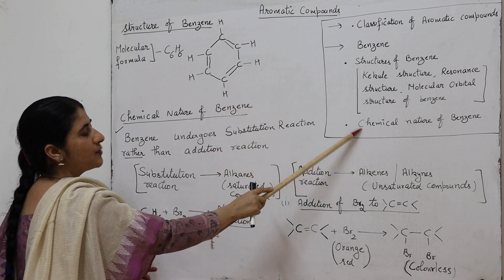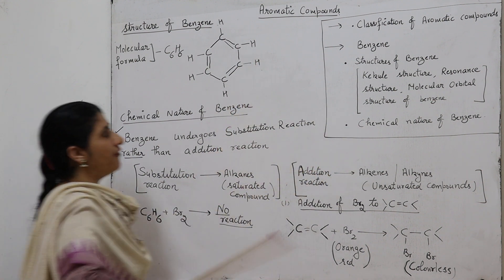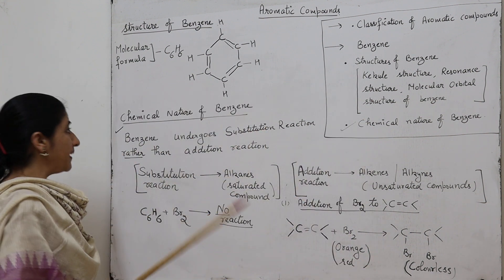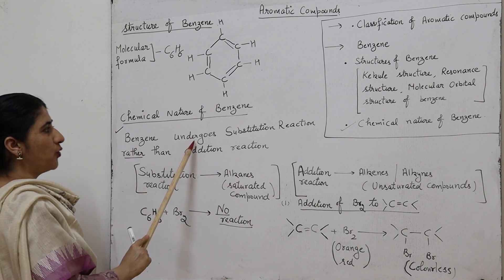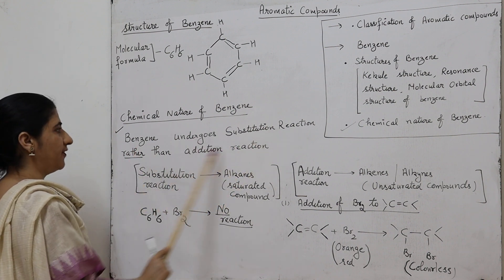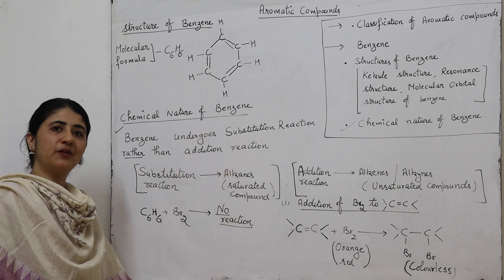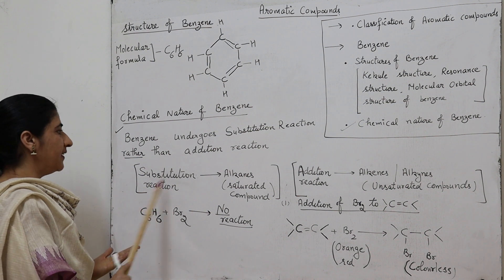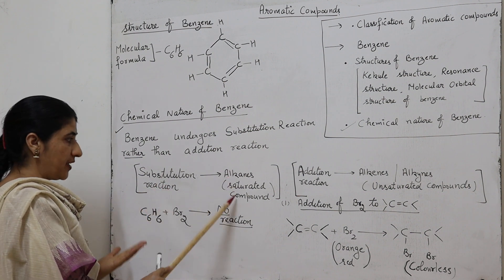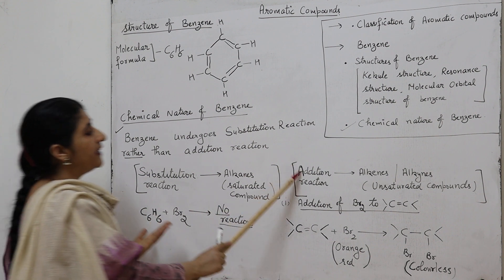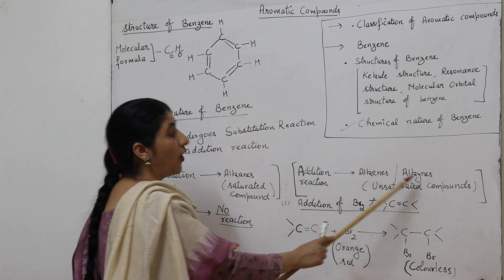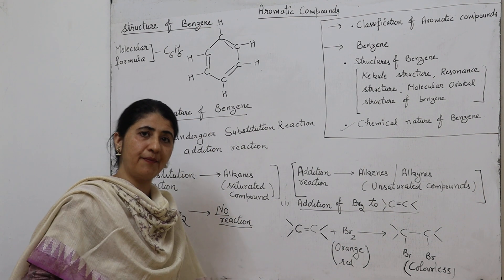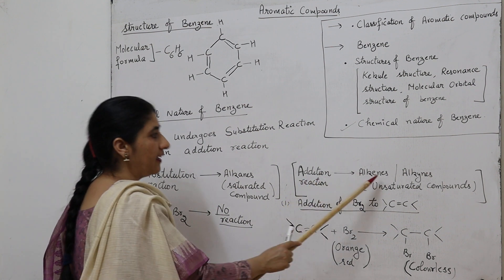Next, we will discuss the chemical nature of benzene. It is experimentally proved that benzene undergoes substitution reactions rather than addition reactions. Substitution reactions are shown by alkanes, which are saturated compounds, whereas addition reactions are shown by alkenes or alkynes, which are unsaturated compounds. We have a few examples of the addition reactions of alkenes.